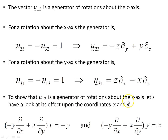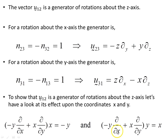To show that u_12 is a generator of rotation about the z-axis, we look at its effect on the coordinates x and y. Taking the generator multiplied by x: d/dy of x is 0 so that drops out, and d/dx of x is 1 times minus y, giving minus y. Taking the same generator multiplied by the y-coordinate gives the x-coordinate, confirming this is a generator of rotations about the z-axis.